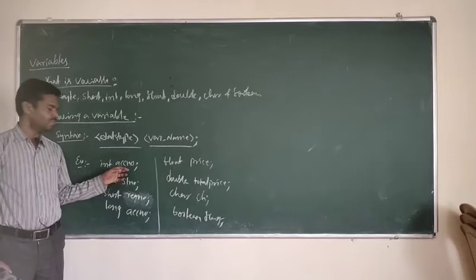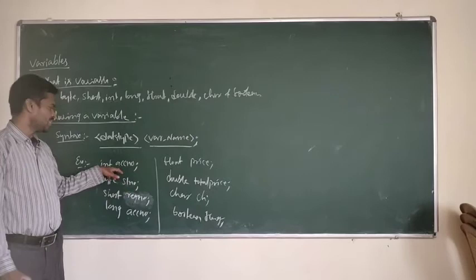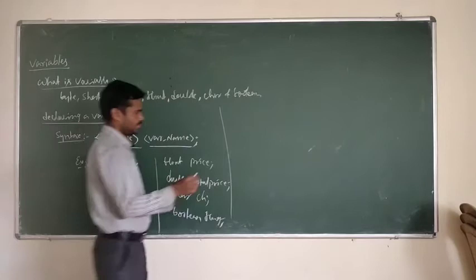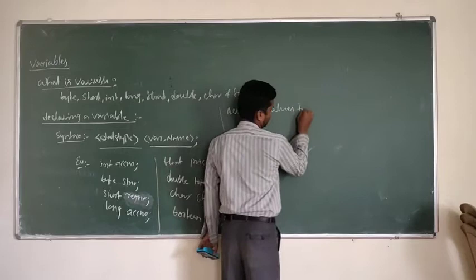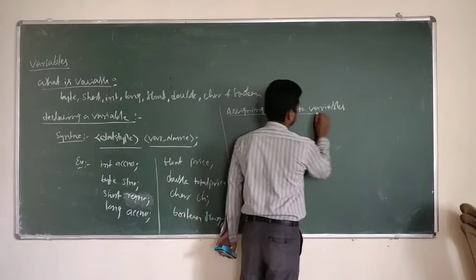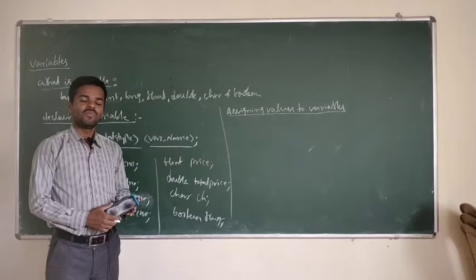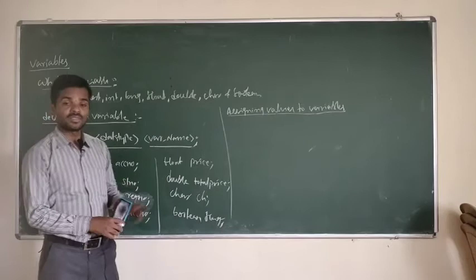Declaring a variable means the variable is declared but not assigning any value — the variable is just declared. Once the value is assigned to the variable, then only the memory will be allocated for that particular variable in memory. Now it is just declared in the particular type. The values can be assigned to the variable in two ways — either at the time of declaration, or we can assign the values after declaration.